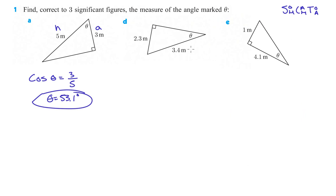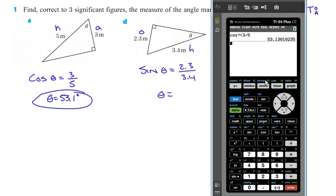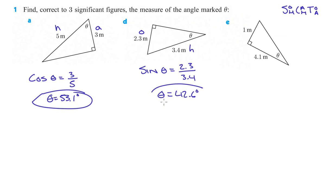For D: this here is the hypotenuse, this is opposite. Opposite and hypotenuse is sine. So I'm going to do sine of theta equals opposite 2.3 over hypotenuse 3.4. To find our angle, we do second sine of 2.3 divided by 3.4. That gives us 42.56, so 42.6 degrees, rounded to three significant figures.